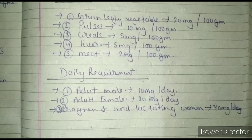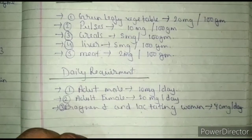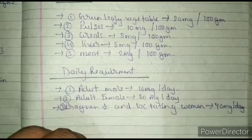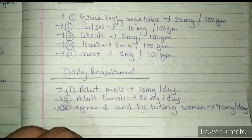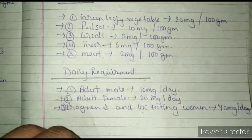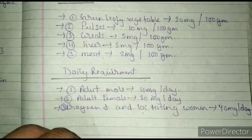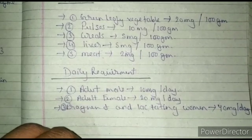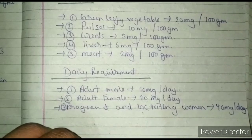A pregnant and lactating woman needs 40 milligrams of iron per day, which is slightly more than a normal male and female. Now let's move to the next point, that is the biochemical function of iron in the human body.